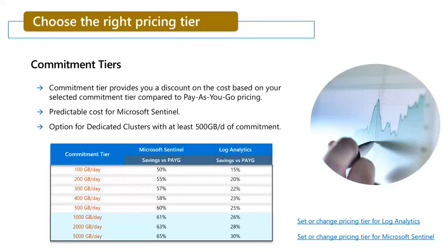Another important point in optimizing costs is to choose the right pricing tier. As mentioned earlier, commitment tier provides a discount on the cost based on your selected tier compared to pay-as-you-go pricing. This also gives you predictable costs for Microsoft Sentinel. For users with a commitment tier of 500 GB per day and above, they will be eligible for a dedicated cluster, which provides additional values such as better performance for cross-workspace queries.